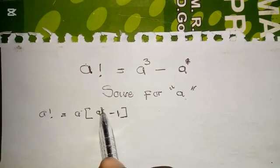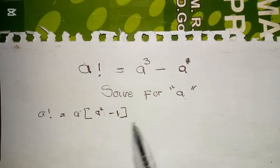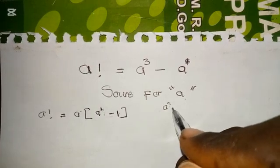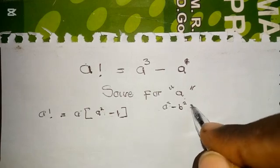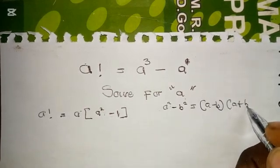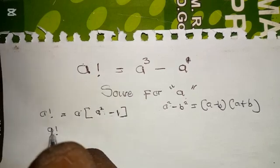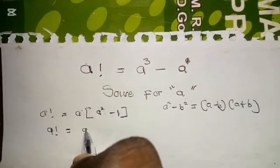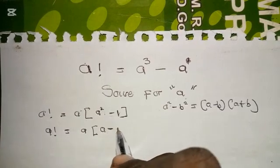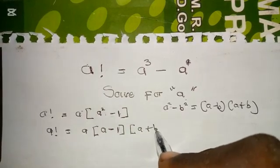We have a raised to the power of two minus one. Don't forget one is the same as one raised to the power of two. Using the formula for difference of two squares — where a² minus b² equals (a minus b)(a plus b) — we get a factorial equals a times (a minus one) times (a plus one).